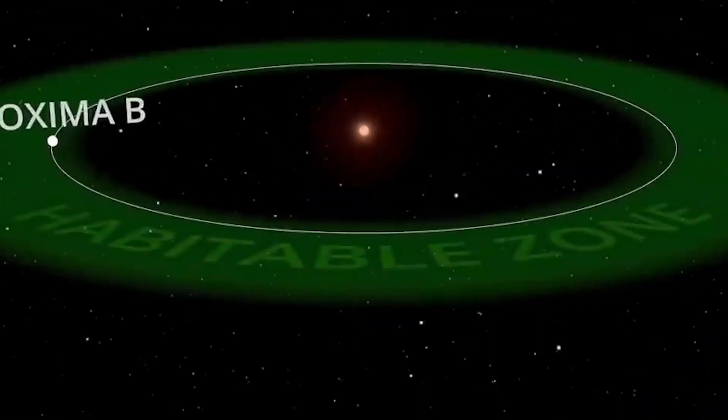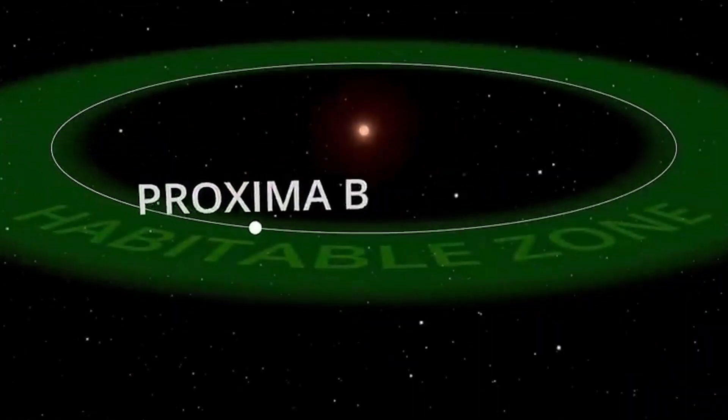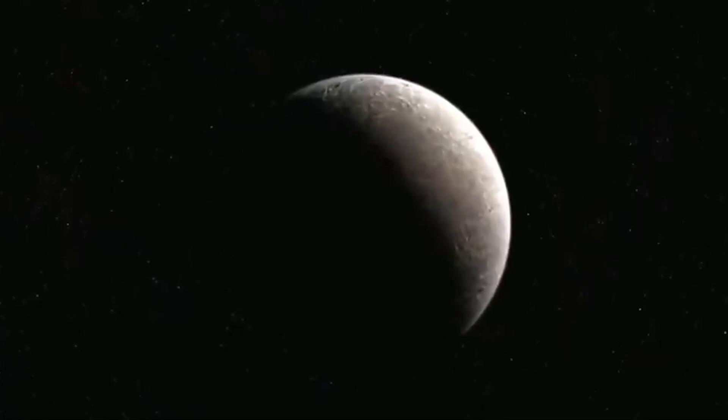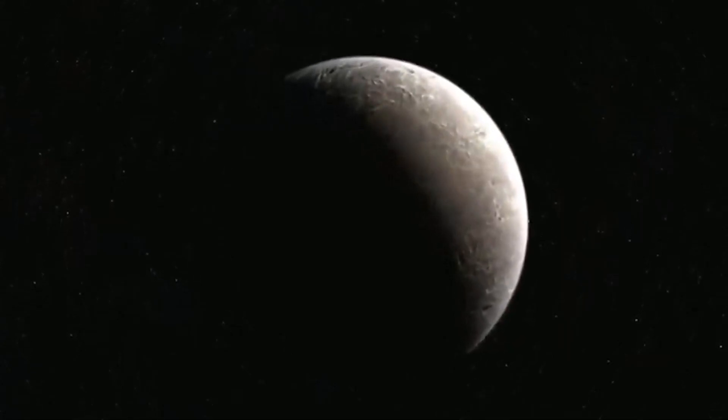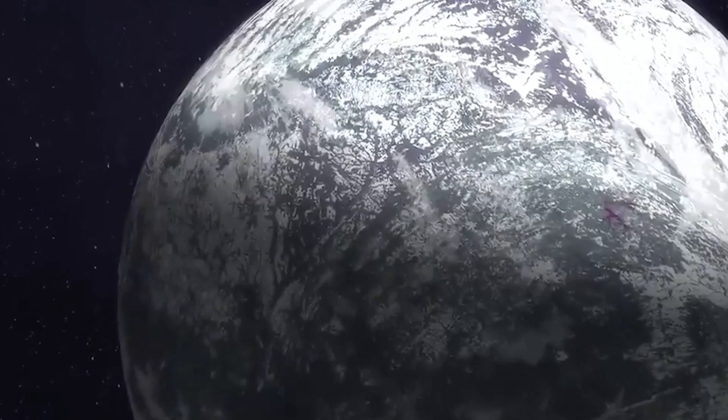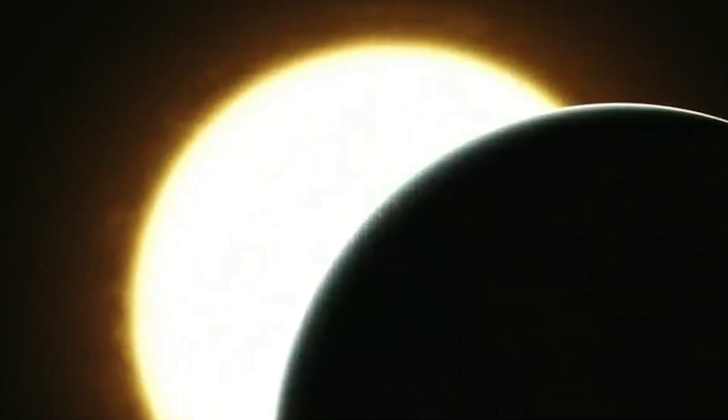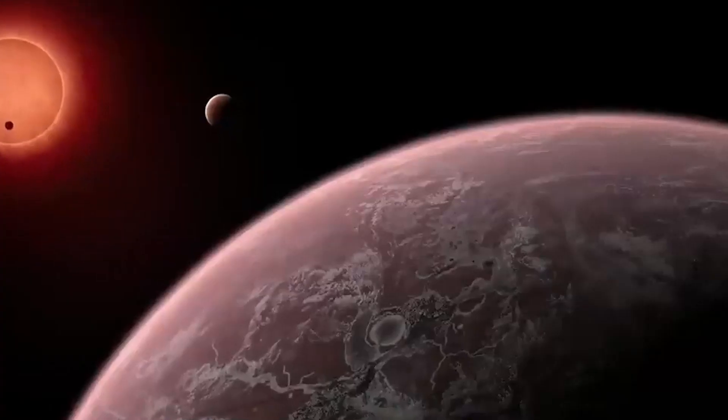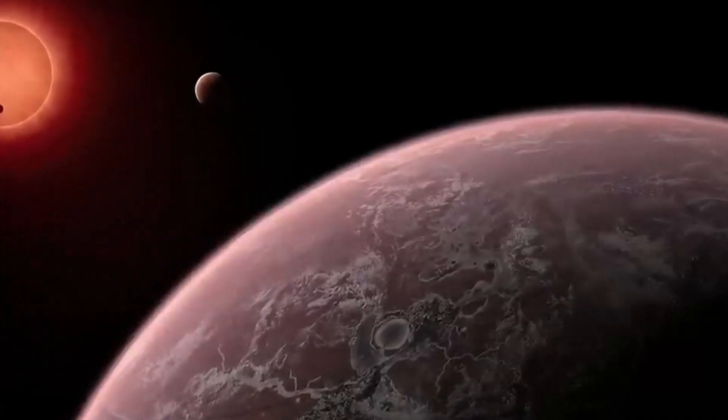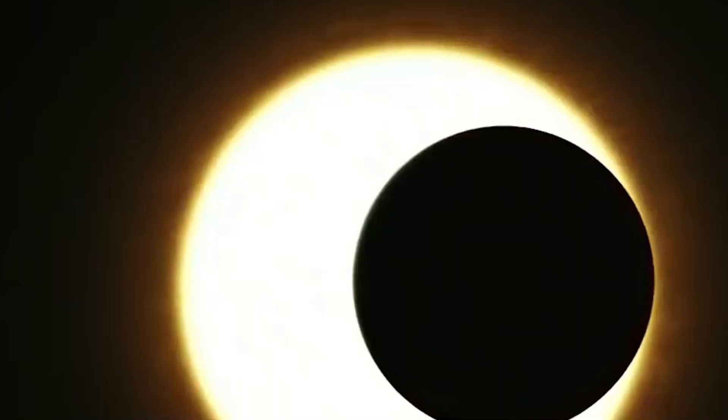A rocky planet called Proxima b is located in the habitable region of the M-class red dwarf star, Proxima Centauri, which has just 12% of the mass of the Sun. At around 1.6 Earth masses and 1.3 times our radius, Proxima b is heavier than us. It travels just 5% of the distance that Earth orbits the Sun, 7 million kilometers, in just 11.2 days as it orbits Proxima Centauri.